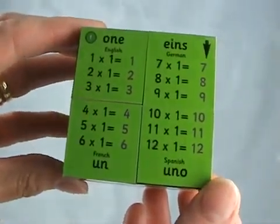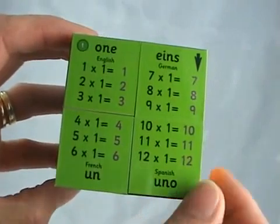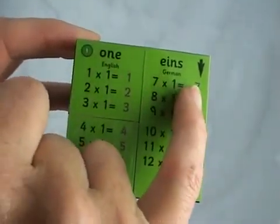This is a multiplication times tables cube. Starting at the green dot, you follow the arrows around the cube.